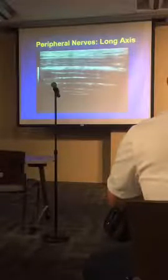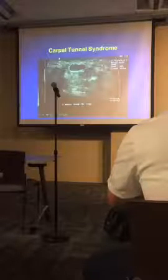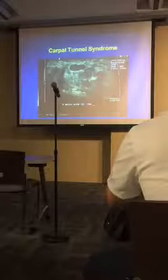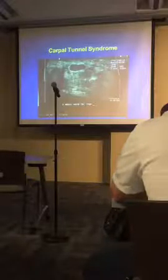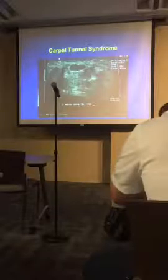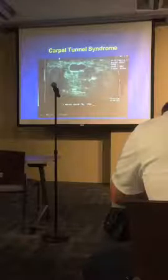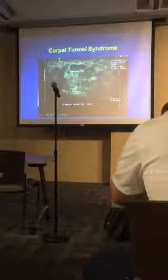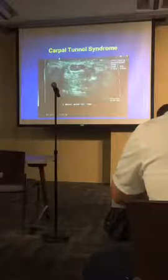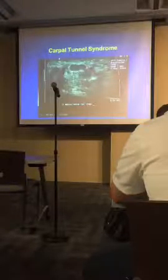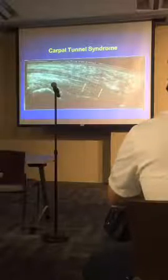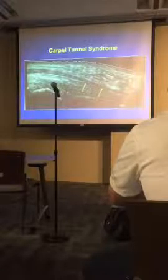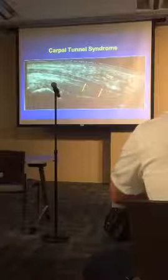When nerves are abnormal, you usually lose the fascicular pattern and the nerve becomes more homogeneously hypoechoic. There is normally a certain amount of fluid circulating through a nerve; if you constrict the nerve it's like putting a dam on — fluid backs up, the nerve swells and gets bigger and more hypoechoic, with the fascicles crowded out by the connective tissue. In carpal tunnel syndrome, the median nerve is about twice normal size. Following it from proximal to distal in the long axis, you can see an area of narrowing caused by a thickened transverse carpal ligament, which is creating the syndrome.